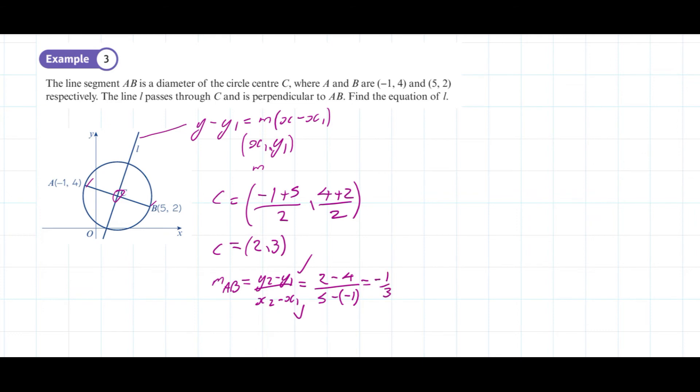Now we're going to work out the gradient of L. If you remember, the gradient of a perpendicular line is -1 over the gradient of the original line. So it's -1 divided by the gradient of AB, which is -1/3, which gives us a gradient of 3.